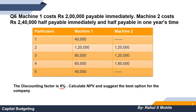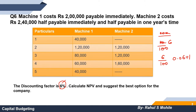The discounting factor here is 6%. The rule to calculate it: take 6 divided by 100, which gives 0.06. Add 1 to get 1.06. The formula becomes 1 divided by 1.06. Press equals on the calculator and you get the discounting factor for year 1. Keep pressing equals for each subsequent year to get the factors for all the years needed to solve the NPV.